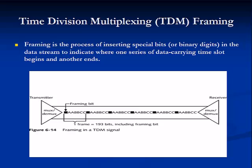Framing is a process of inserting special bits, or binary digits, in the data stream to indicate where one series of data-carrying time slots begins and another ends. T-carriers and SONET each use different framing and timing conventions. Cellular networks use TDM technologies.